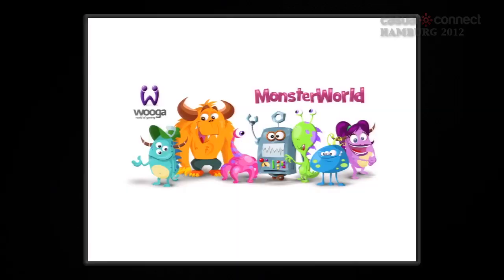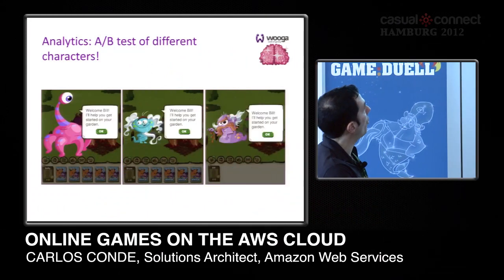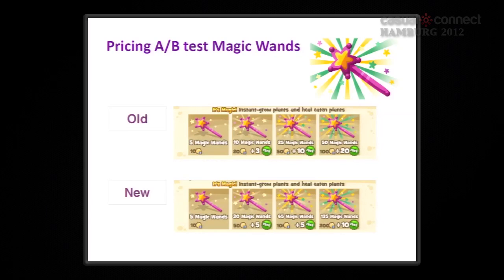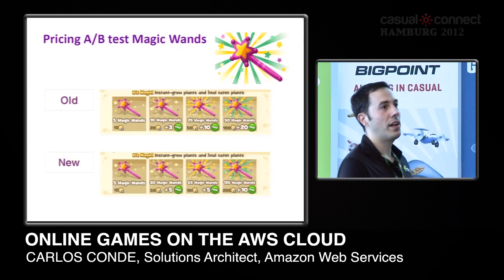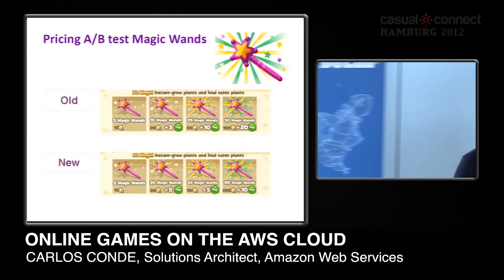Wooga used A/B testing for their game Monster World to test different characters — one part of users had one character, another part had a different one — to find which was most successful. They also did this for virtual goods pricing. Group A had the original pricing for magic items purchasable with Facebook credits; Group B had a new pricing model. After one month, Group B was buying far more magic items than Group A. So they completely moved to the Group B pricing model, backed by real data.